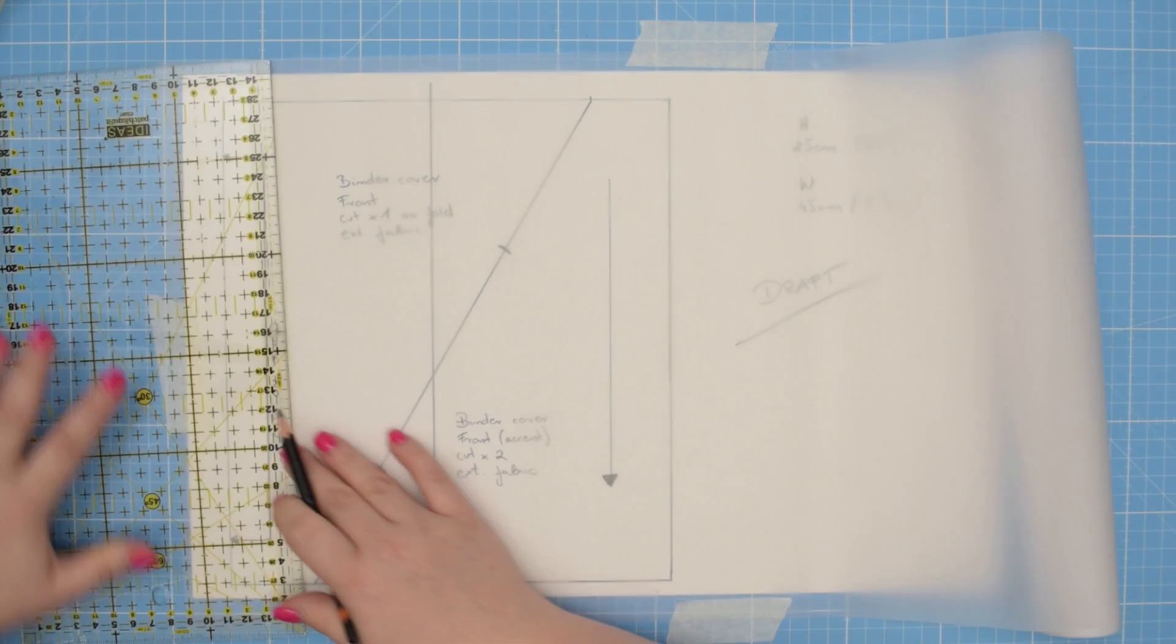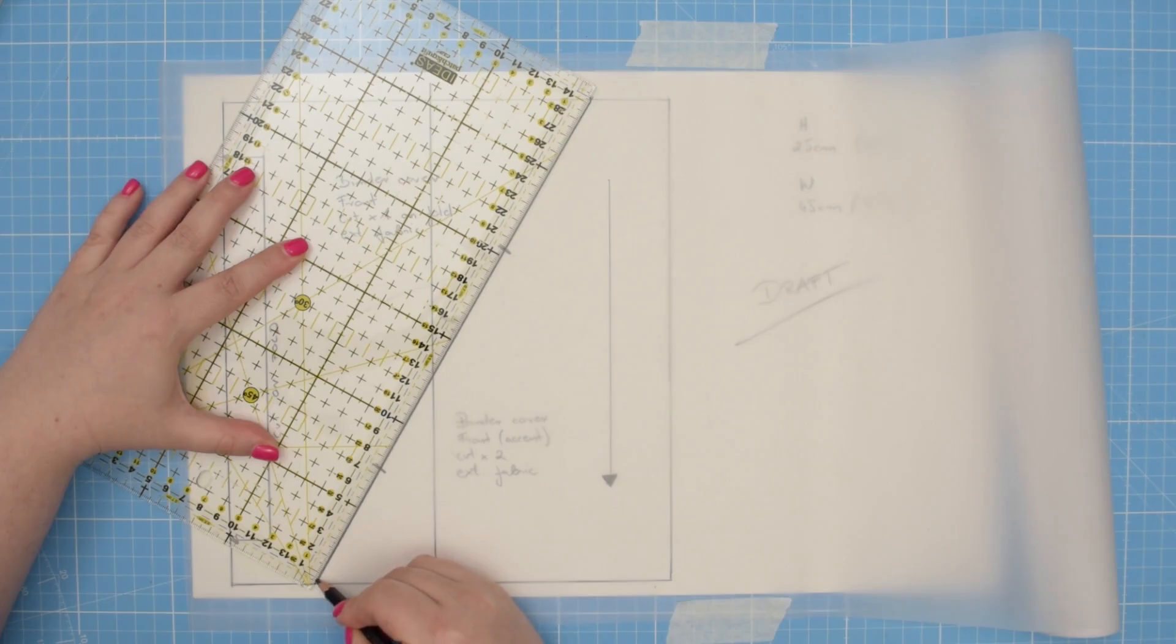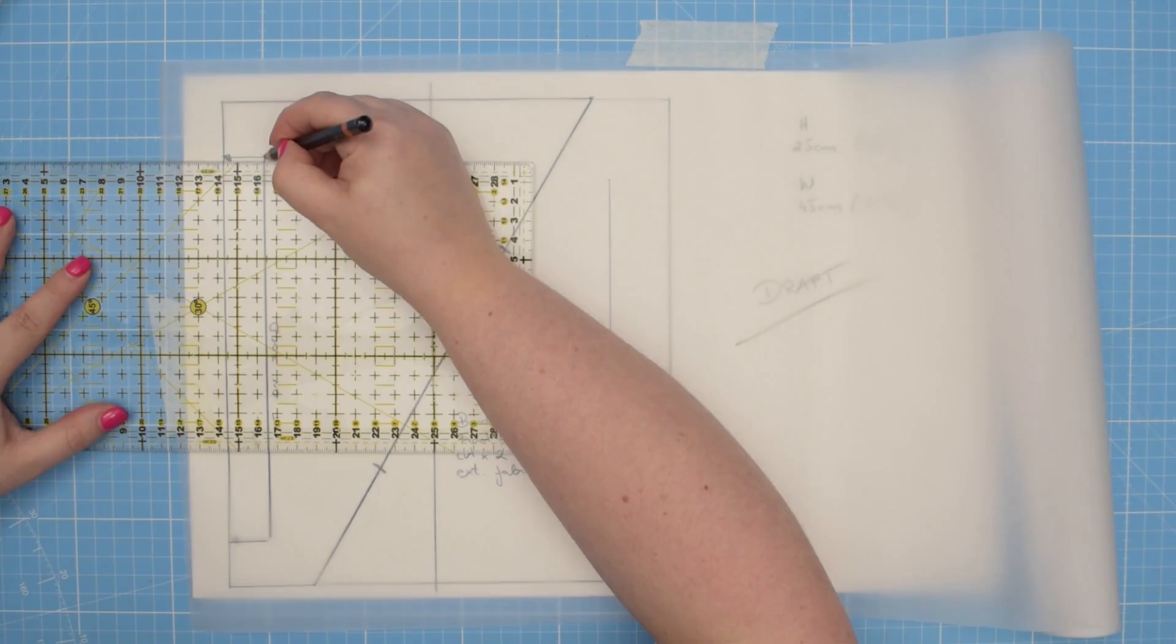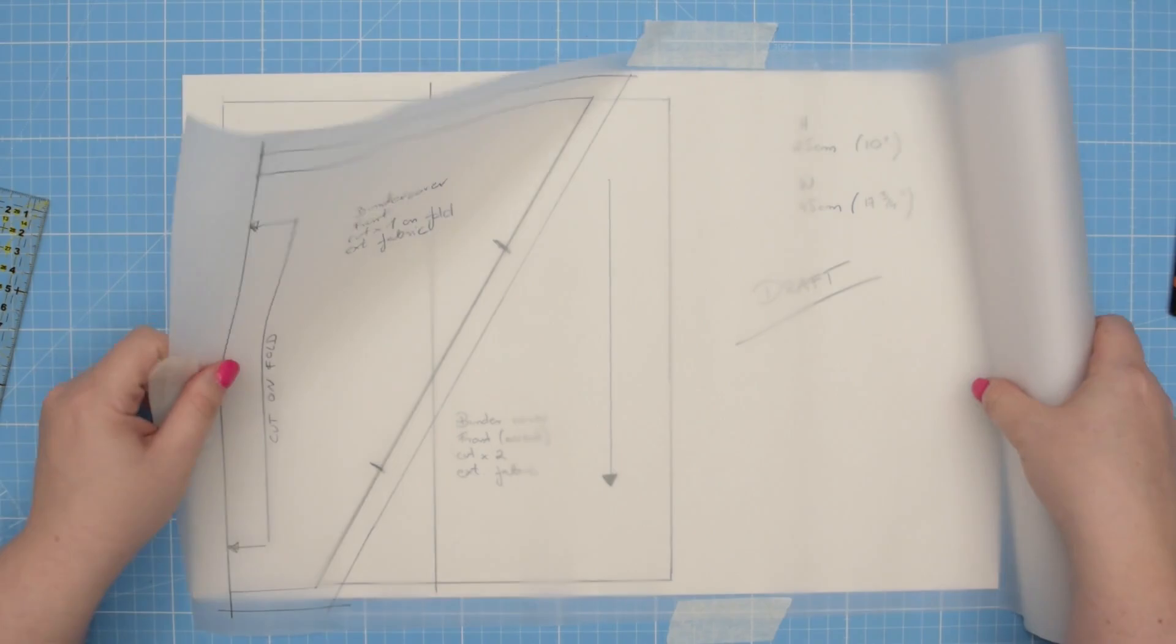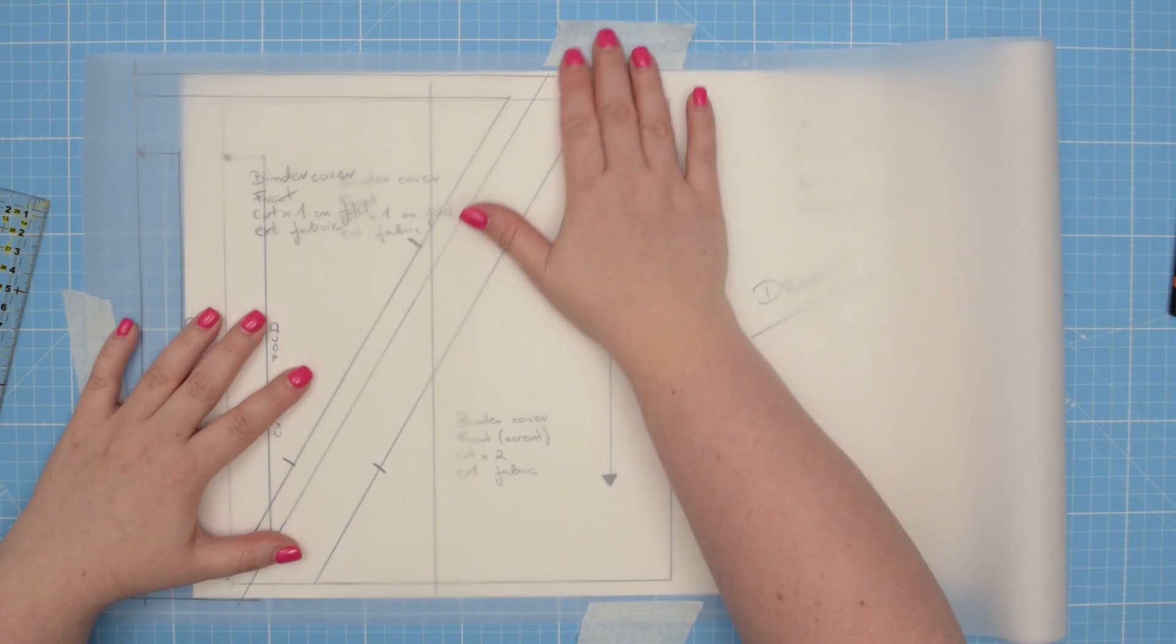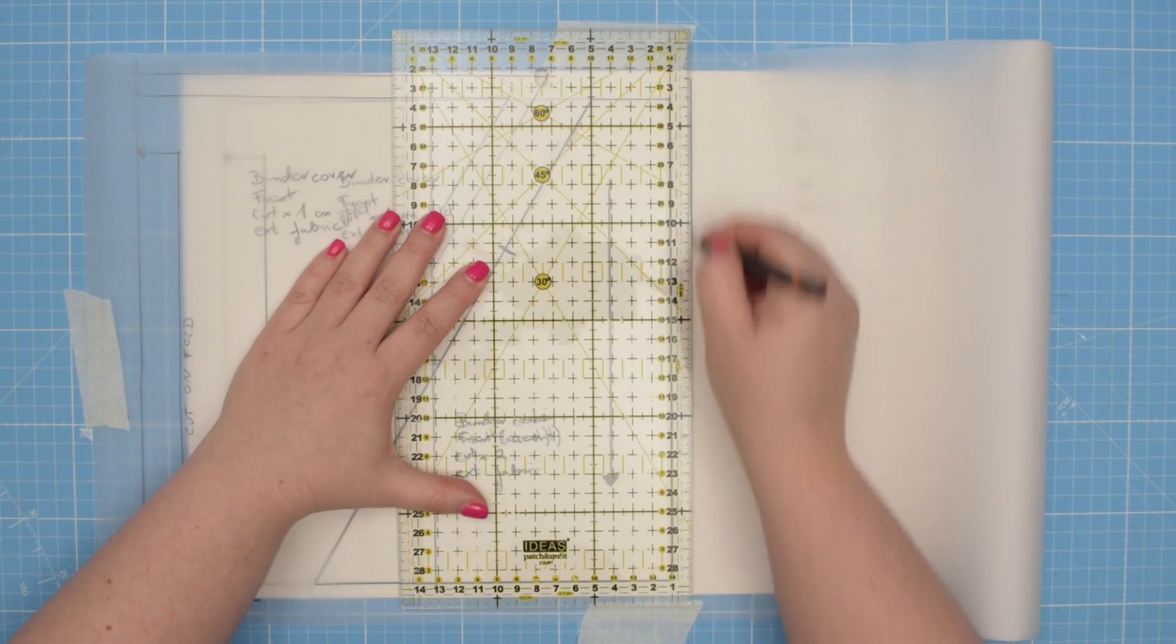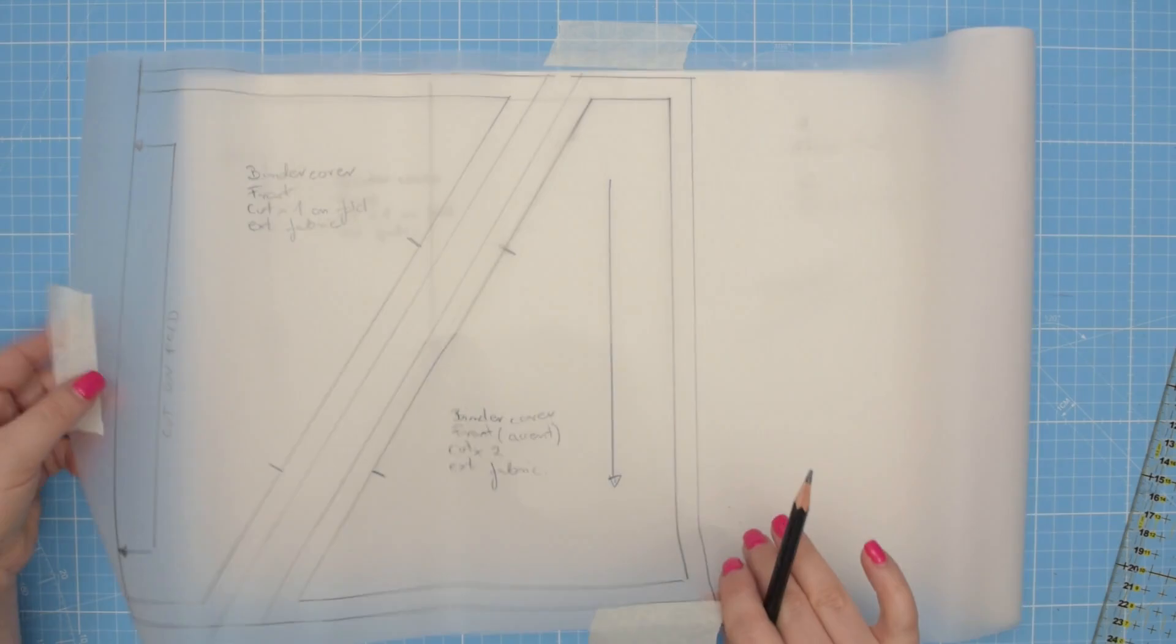Next, we can trace the front piece. This is this one. Again, you're going to trace along those lines. Mark your notches and your cut on fold. Then, label your pattern and add seam allowance. I'm going to move my paper so I have space for the seam allowance. And I'm going to trace the other pattern piece. Then, you can add one centimeter seam allowance all around. Here we go.